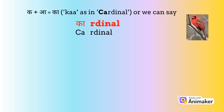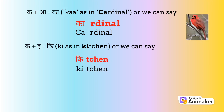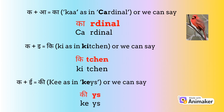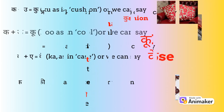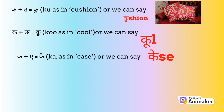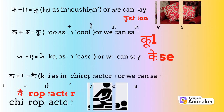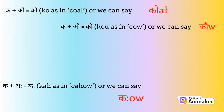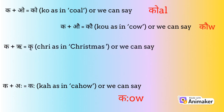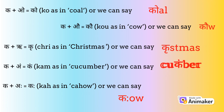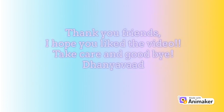Ka plus 'i' becomes 'ki' as in kitchen. Ka plus 'ee' becomes 'kee' as in keys. Ka plus 'ai' becomes 'kai' as in chiropractic. Ka plus 'u' becomes 'ku' as in Christmas. Ka plus 'oo' becomes 'koo' as in cucumber. That's it for today.